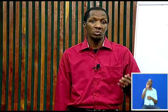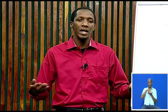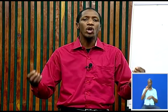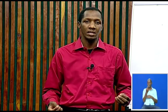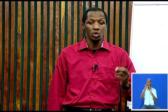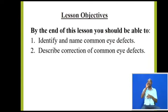Defects simply refer to conditions where a part of an organism is not able to carry out perfect functions. In our lesson today, we will analyze only the common eye defects. There are thousands of diseases which affect the eye, and these defects are found in about 40% of the human population. By the end of our lesson today, you should be able to identify and name common eye defects, and describe the correction of these common eye defects.